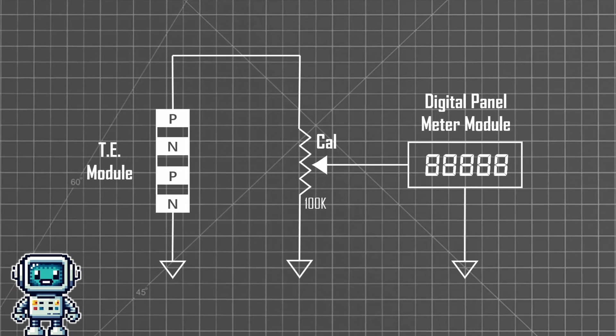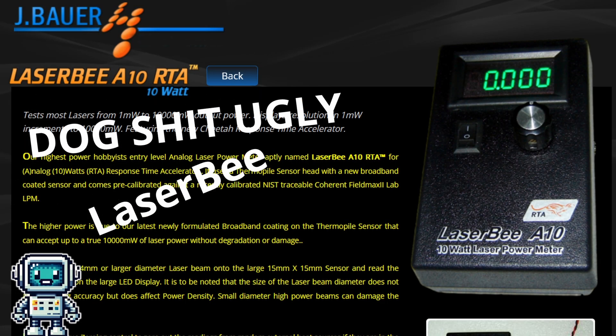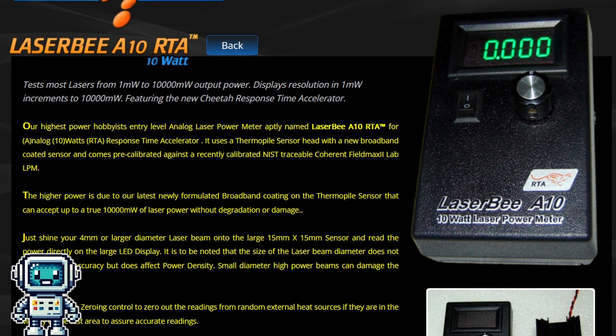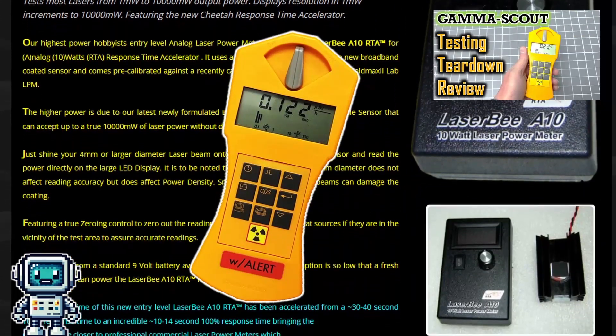And it is not the only laser power meter on the market that operates using this principle. This dogshit ugly laser bee is pretty similar but costs over 4 times as much. But to be honest, the laser bee is to laser power meters what the gamma scout is to geiger counters.